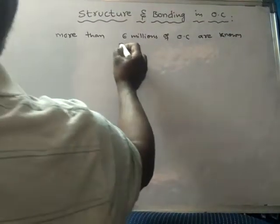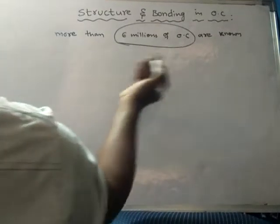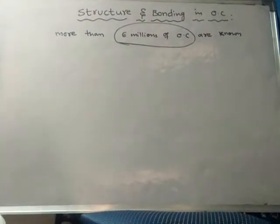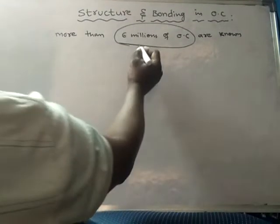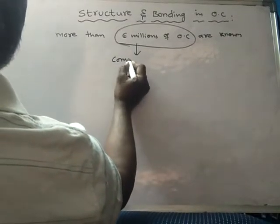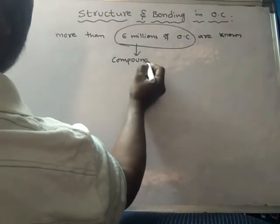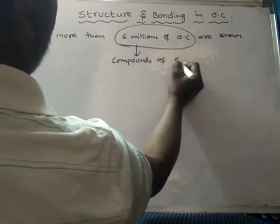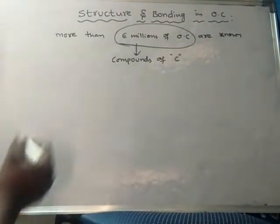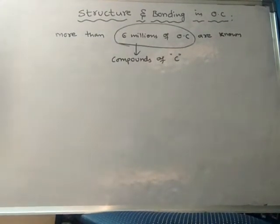So, the number of organic compounds, the number of compounds, all these are called as compounds of carbon. Organic compounds means compounds of carbon, that means all these elements contain carbon.